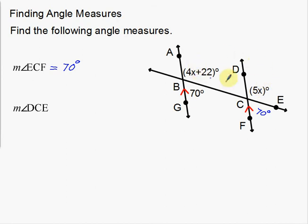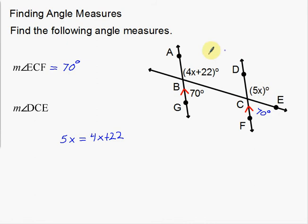Notice that DCE is up and to the right. This angle over here is also up and to the right — so these two are corresponding angles and they are in fact congruent, just like the last one. I'm going to set that up as an equation: 5X equals 4X plus 22. If these two angles are congruent, I can set them equal to one another and solve. Subtracting 4X from both sides gives 1X, so X is equal to 22.